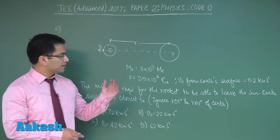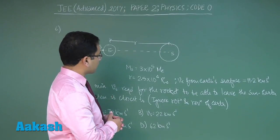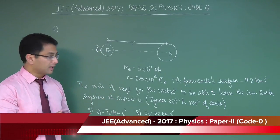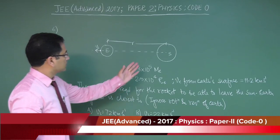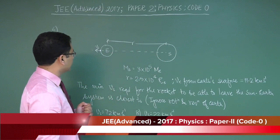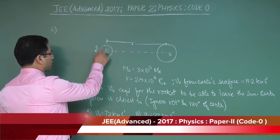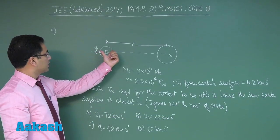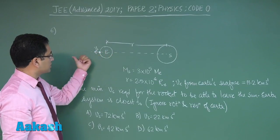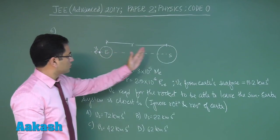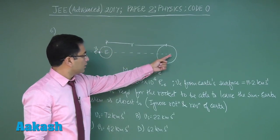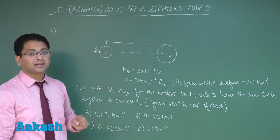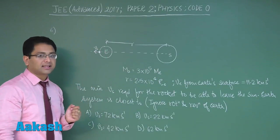Question number six is another question from gravitation with a slight modification from the regular feature. A sun-earth system is given with a rocket, and the question has specifically said that the rocket is to be launched in a direction opposite to that of sun, along the line joining the sun and earth. The question has categorically stated this and shown it in figure form.